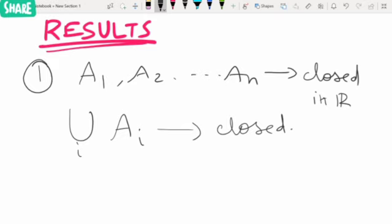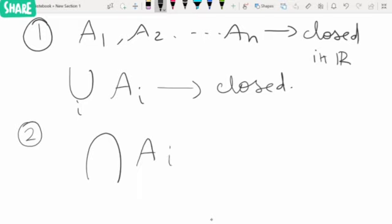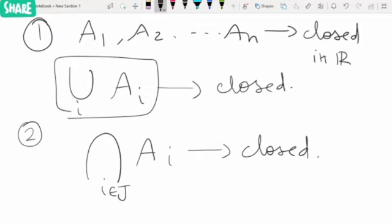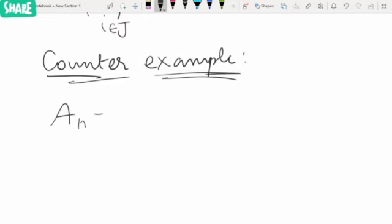The second result: the arbitrary intersection of closed sets - it can be any index set J - this is also closed. Note that this union result is not applicable for arbitrary unions; it is applicable only for a finite number of sets.